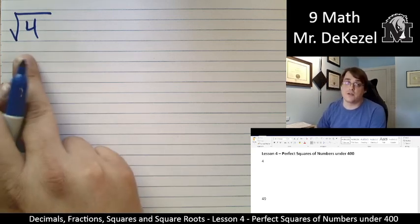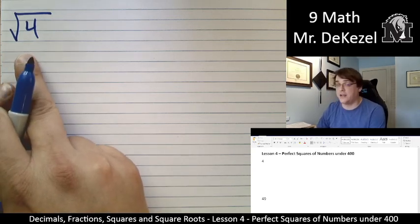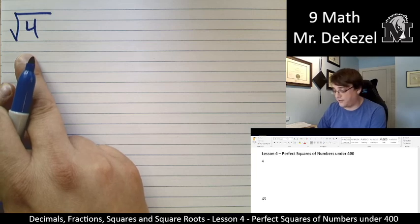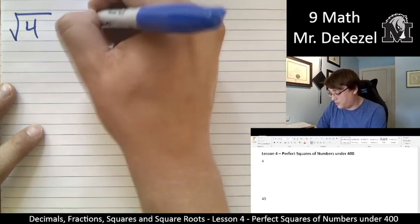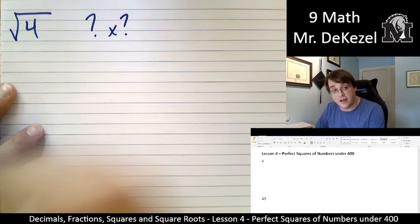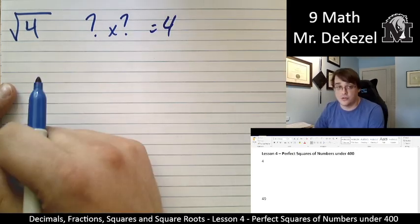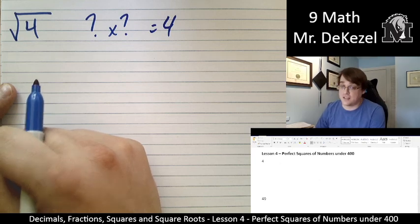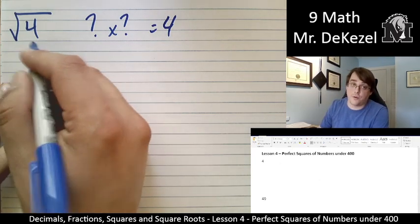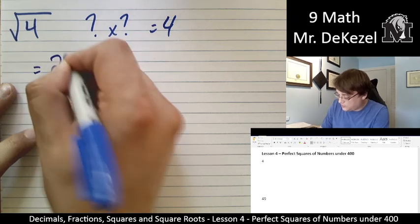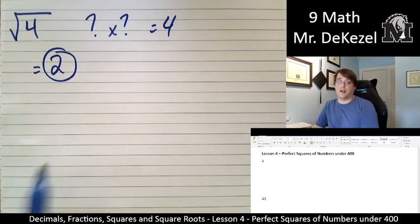And what that means is we are trying to find out what number multiplied by itself gets us four. So what number multiplied by itself, these two are the same number, equals four. So I'm thinking two times two gets us four. So the square root of four would equal two. So two would be our answer.